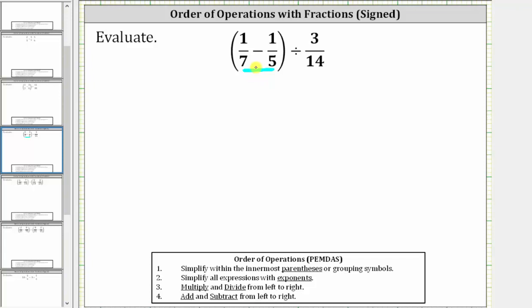In order to add or subtract fractions, we need a common denominator, hopefully the least common denominator, which in this case is the least common multiple of 7 and 5.